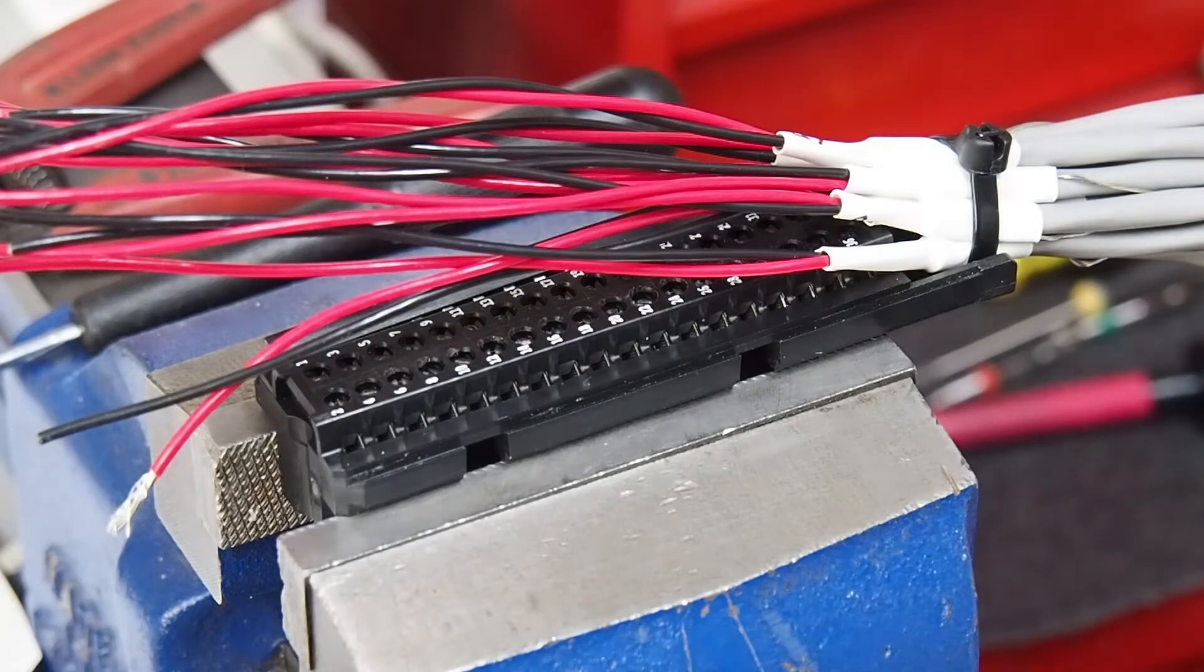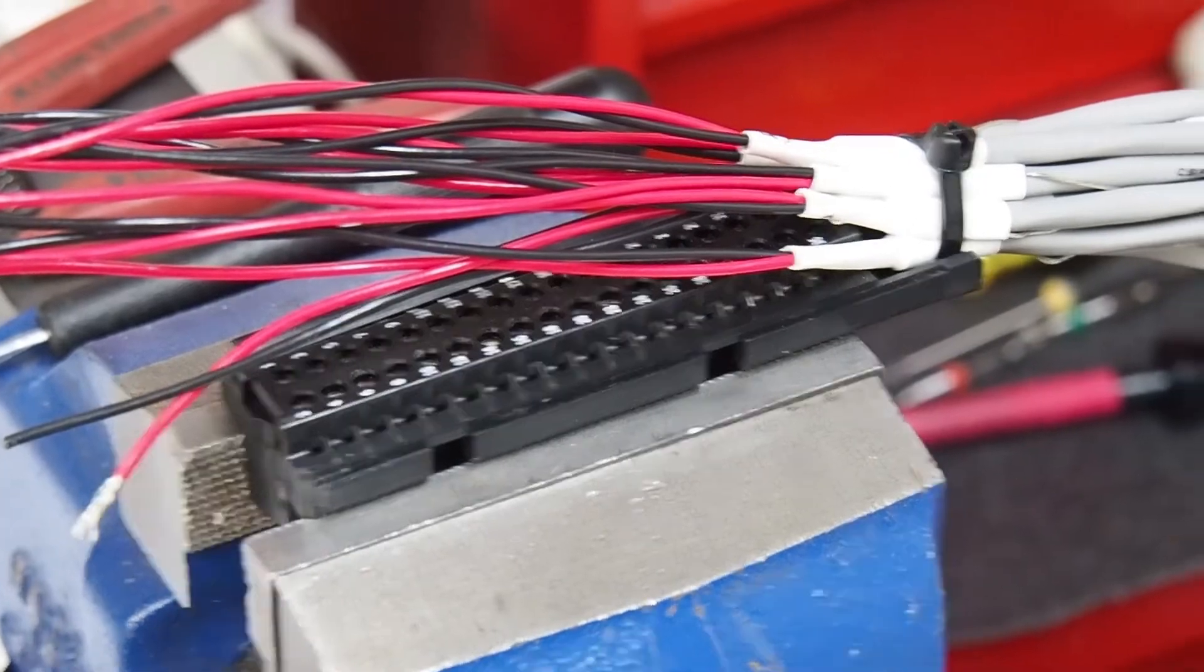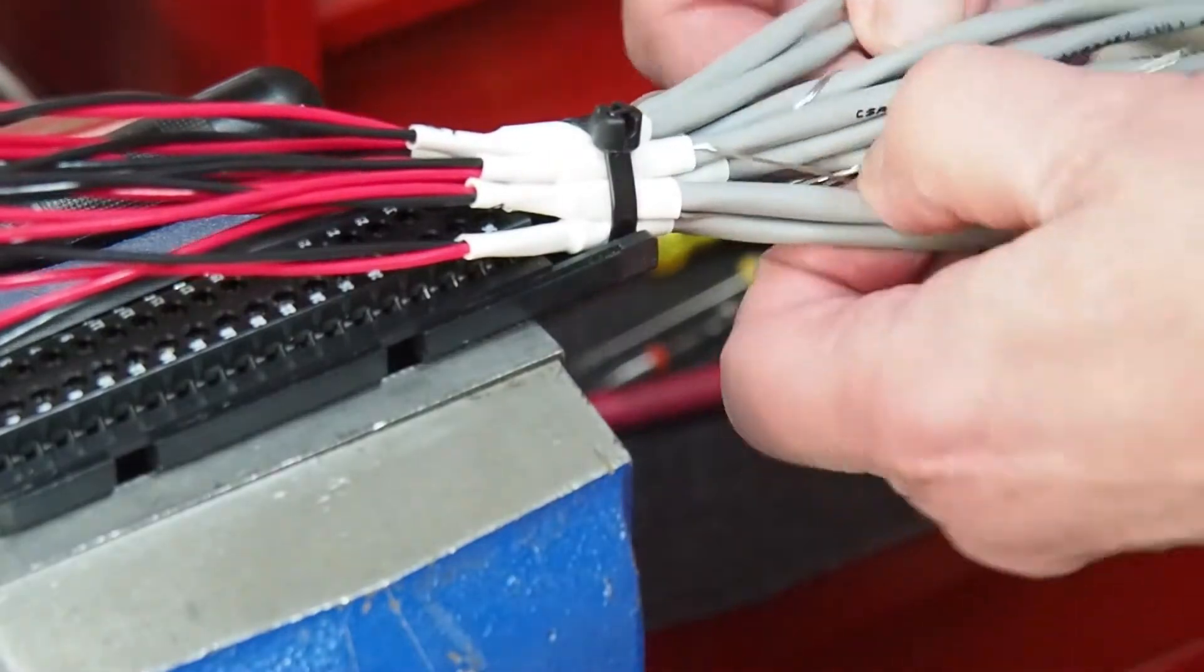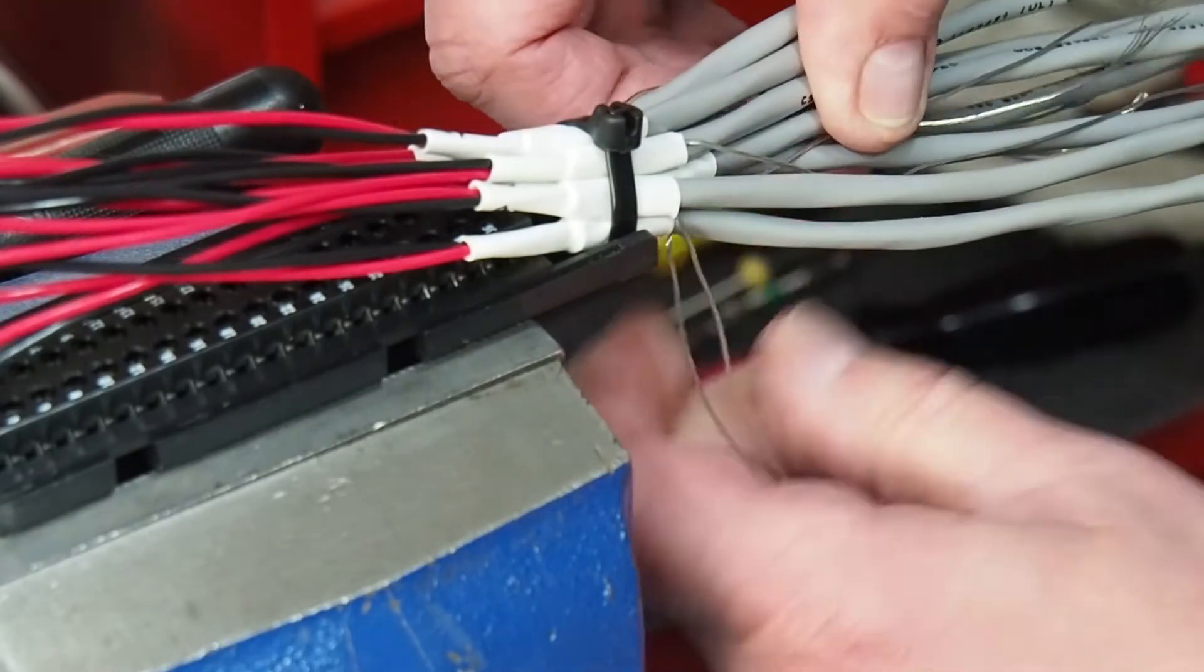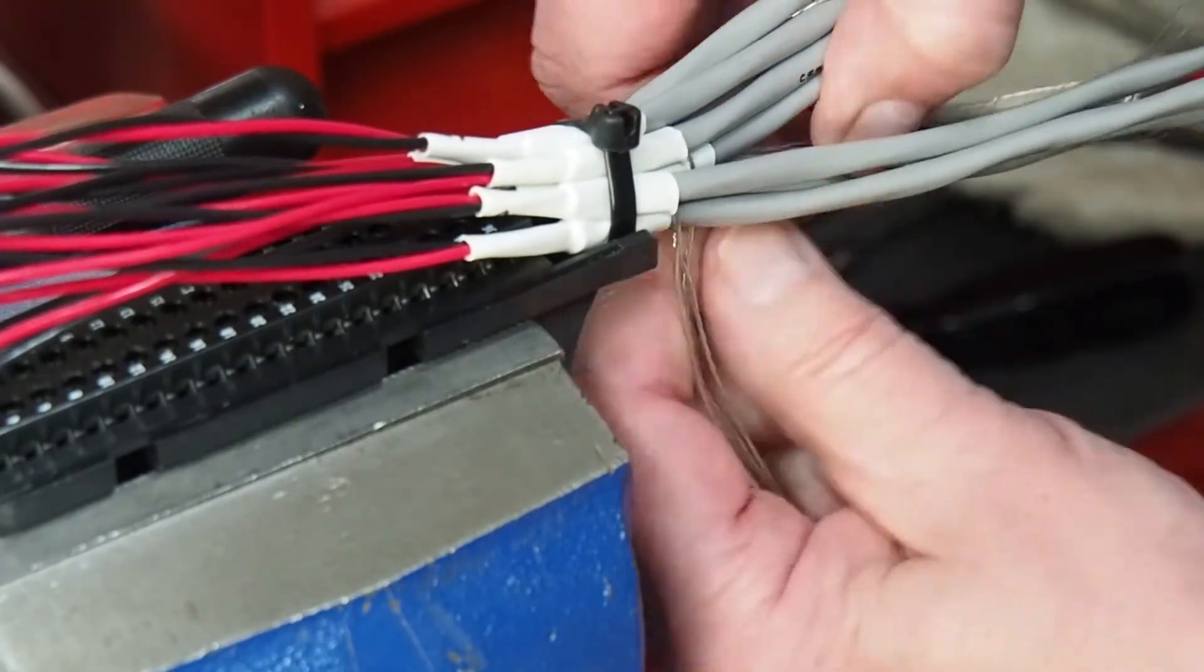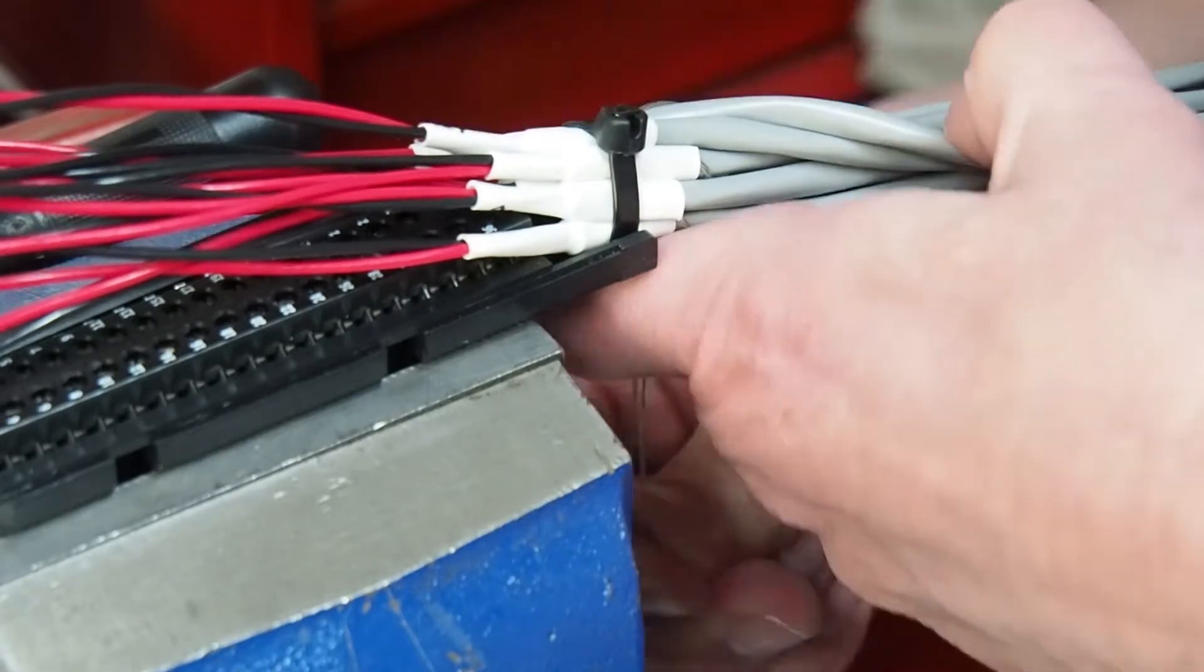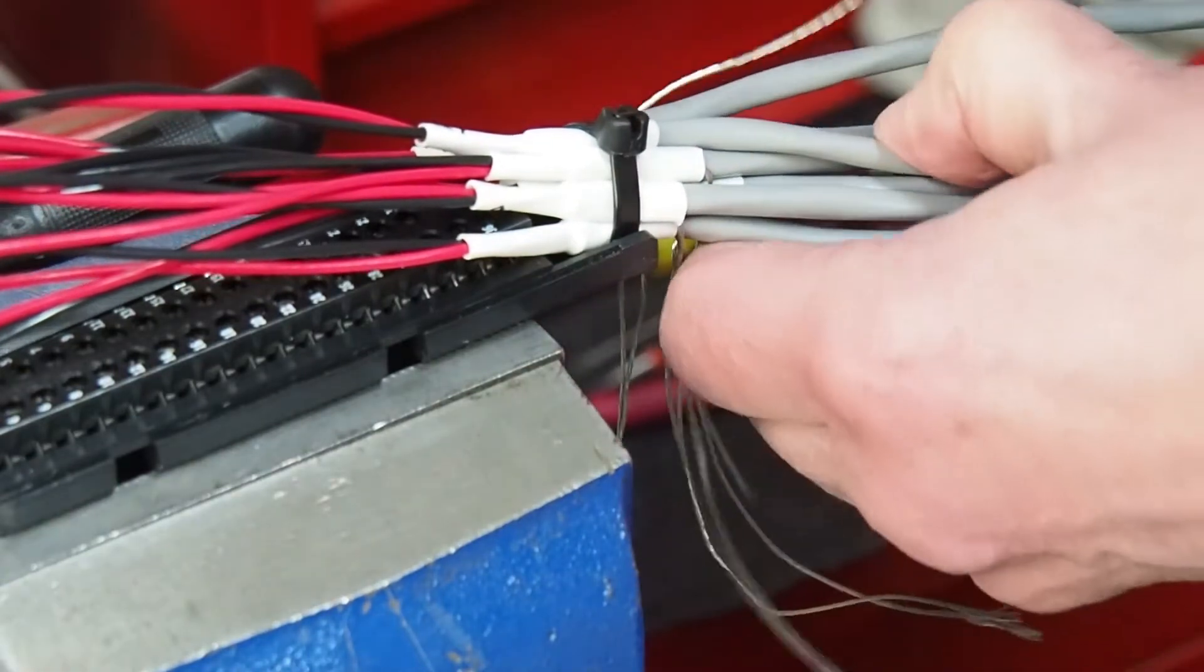Now the other thing you'll notice, I'll just swing over a little bit, is the shields. I always take the shields and keep them out where they're accessible. I bring them to the back of the bundle, usually like four or five one side, four or five the other, and at the end I put them all together.